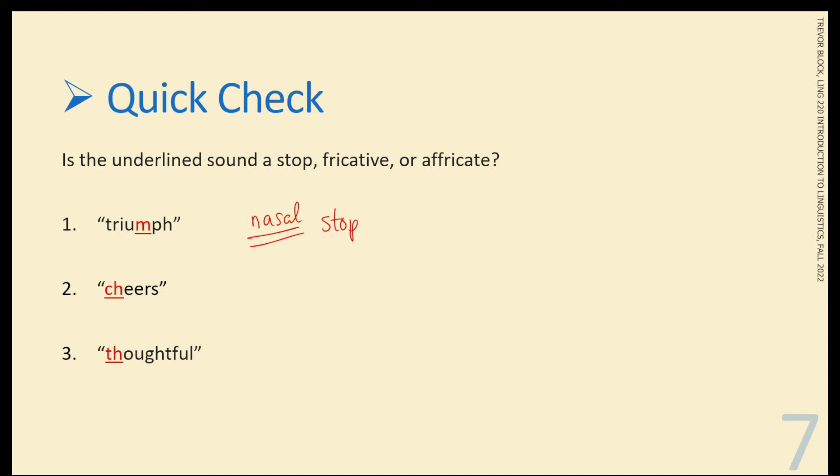Cheers. Ch. This is going to be an affricate. So if you were to prepare to say ch, but not release it, there wouldn't be any sound coming out. But once you release it, you can hold it. So that's what affricates are able to do, that stops and fricatives can't do. Stops have this silence before release, fricatives have this continuous release, and affricates have a bit of both.